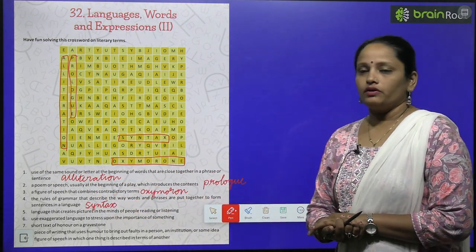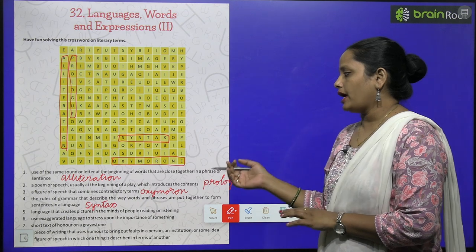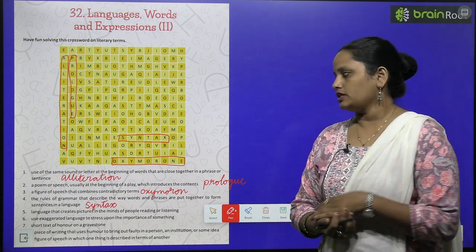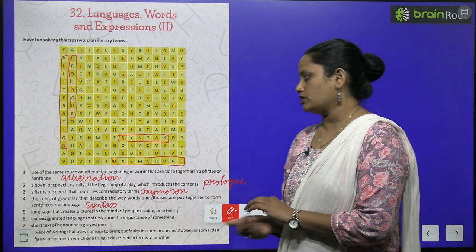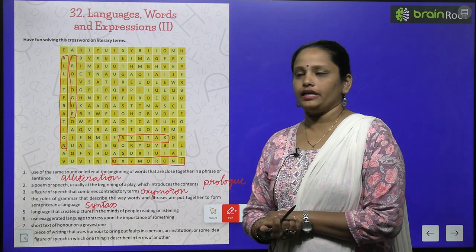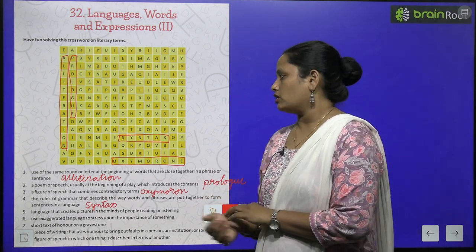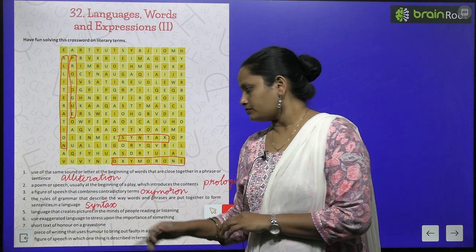The third one is a figure of speech that combines contradictory terms. This figure of speech combines contradictory terms and it is called oxymoron, and here it is.